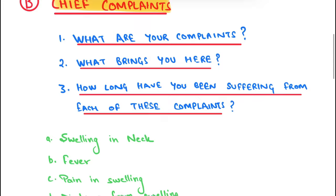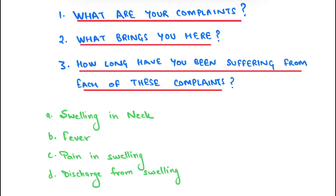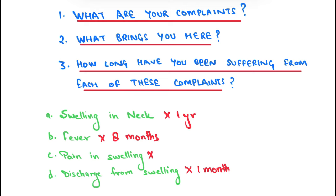Suppose a patient comes to you in the OPD. You ask what are their complaints and they list several; but when asked what brings them here, they mention the latest complaint — for example, discharge from a swelling for one month. You must write all chief complaints in chronological order: for instance, swelling in neck for one year, fever for eight months, pain for five months, and now discharging sinus for one month. If complaints start simultaneously, list them in order of severity.